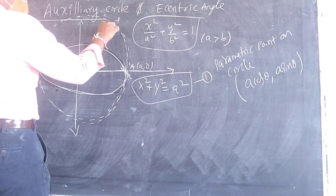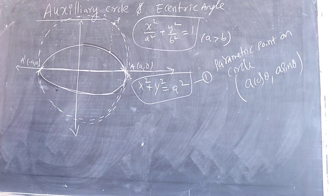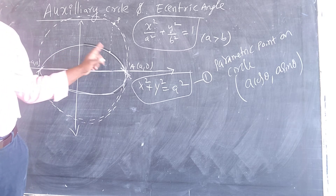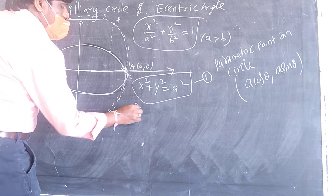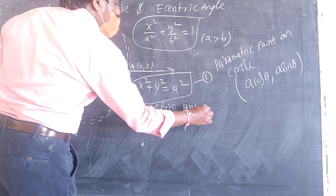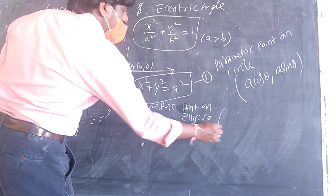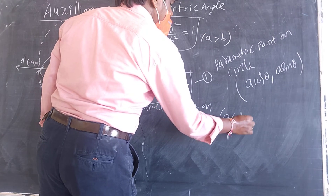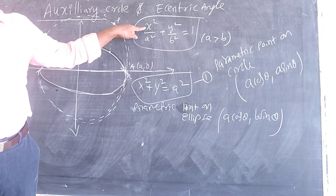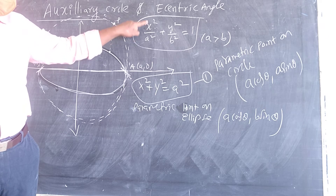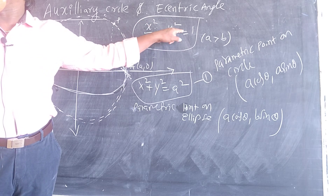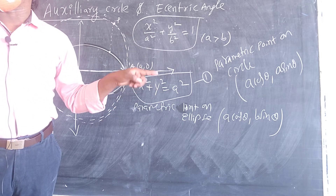Correspondingly, the parametric point on the ellipse is (a cosθ, b sinθ). If you substitute into the ellipse equation: a²cos²θ/a² + b²sin²θ/b² = cos²θ + sin²θ = 1, which is satisfied. So the parametric point on the ellipse is always (a cosθ, b sinθ), while on the circle it is (a cosθ, a sinθ).